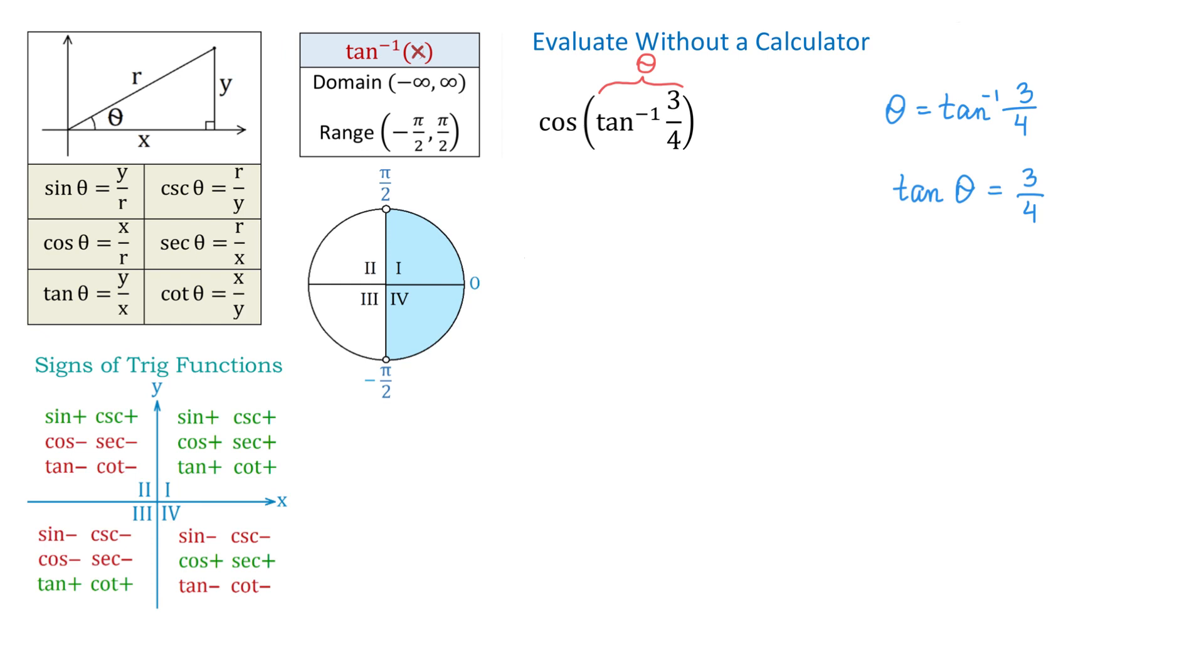Now, I will draw the rectangular coordinate system and then I will draw the right triangle. Here we have the rectangular coordinate system, and angle theta will have the vertex at the origin and the initial side along the positive x-axis.